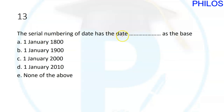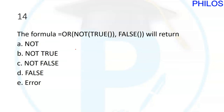Question thirteen: the serial numbering of dates has blank as the base. The base for serial numbering is B — that is, 1st January 1900. It is very important to know this.